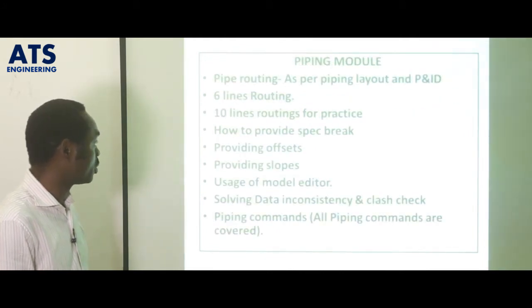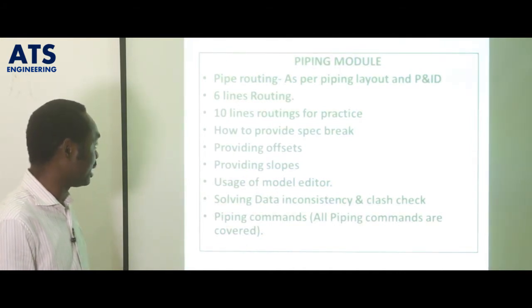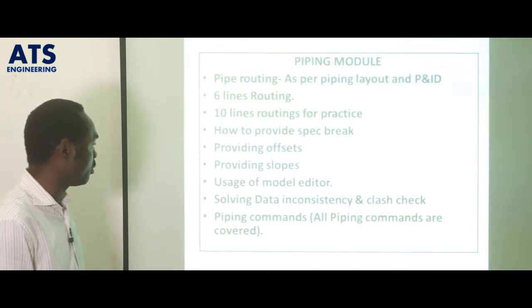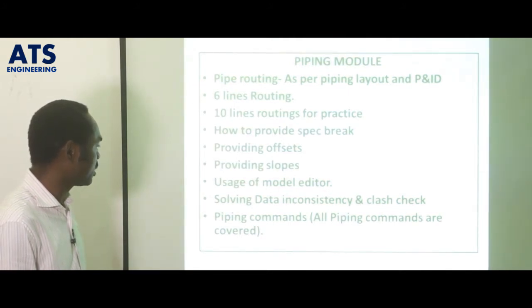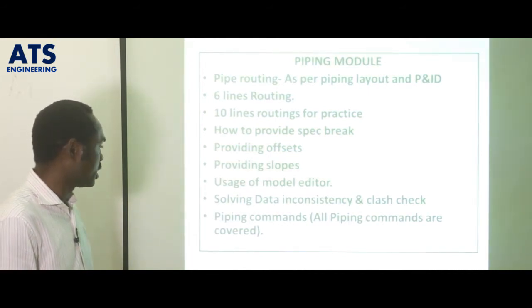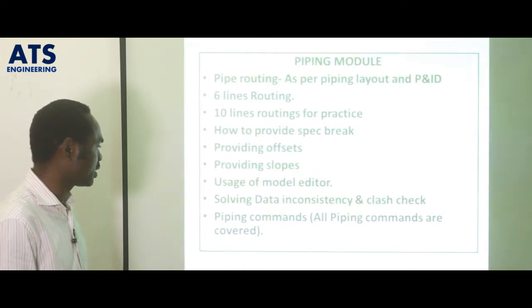In the piping module, we are able to model pipes using layout and also the P&ID. We are looking at a minimum of 6-line routing in PDMS, and will do 10-line routing for practice, including how to consider spec breaks when routing pipes. We will also look at using offset, modeling slopes in pipe, using the model editor, and checking your piping system to generate isometrics. We will do data consistency and class checks to avoid interference, and also learn piping commands in PDMS.